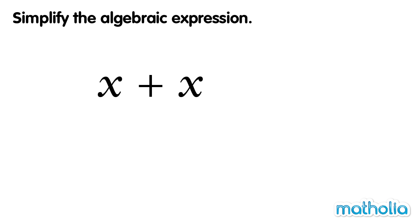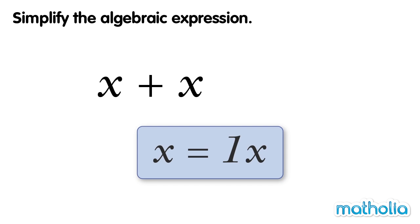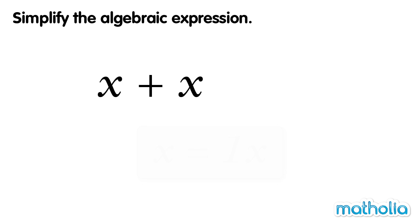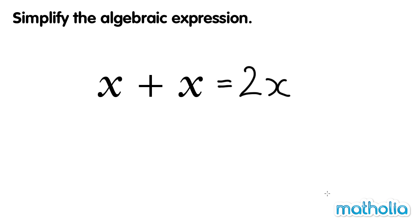Simplify the algebraic expression. Let's simplify x plus x. Let's group the x's together. Remember that x is the same as 1x. 1 plus 1 equals 2. So, 1x plus 1x equals 2x. x plus x equals 2x.